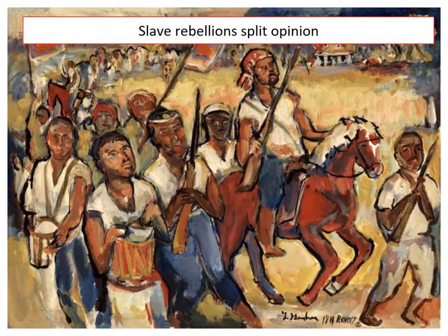The first reason why opposition didn't work is that slave rebellions split opinion. The enslaved on the plantations did not tolerate their horrific conditions lying down. Many of them revolted and led rebellions against the white plantation owners.